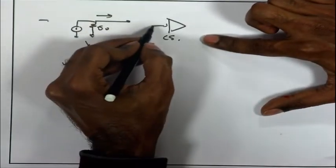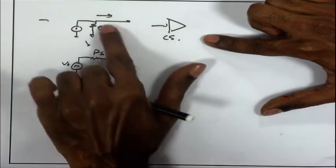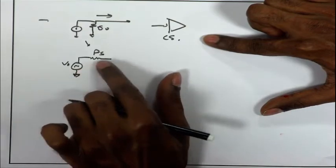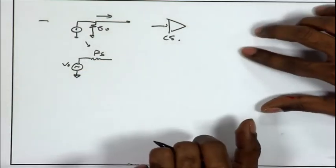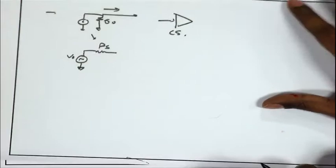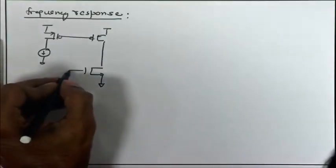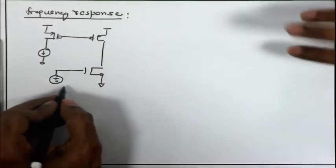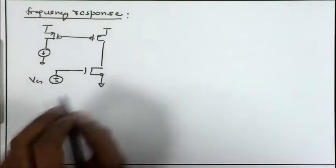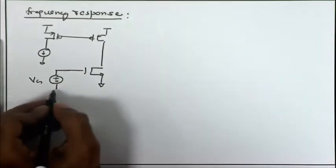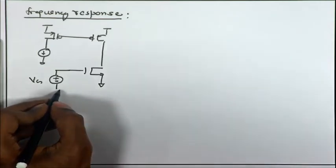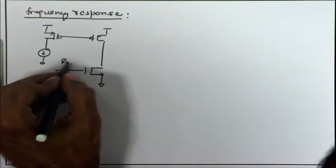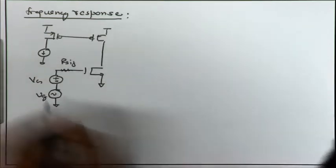This is my common source amplifier getting its signal from the previous stage. I can model that previous stage as an equivalent Thévenin model, where the output signal is in series with R_S, the source resistance of the previous stage. I can represent the DC bias at the gate, and on top of that there is the AC signal swing with source resistance R_signal capturing that source resistance.